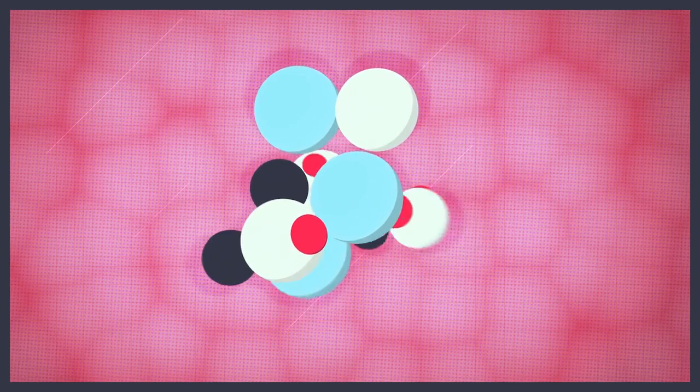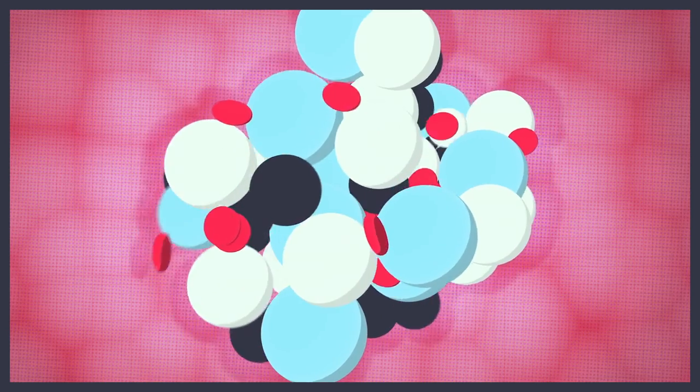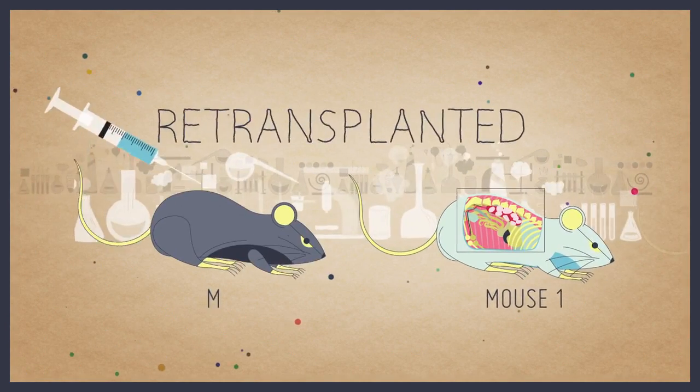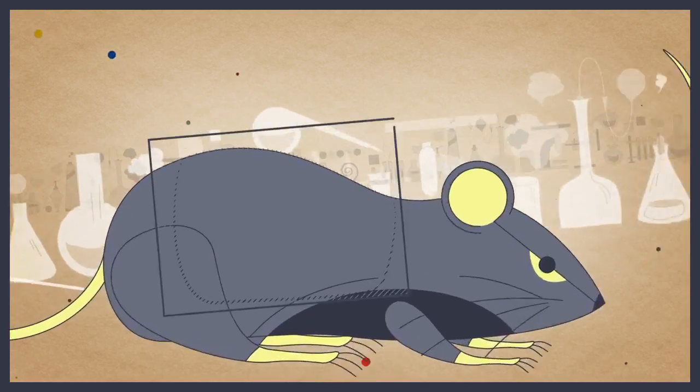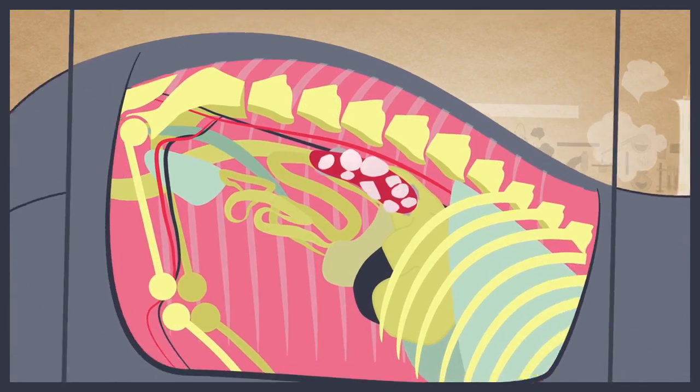These colonies contained a mixture of different blood cell types. Incredibly, when these colonies were removed and re-transplanted, these rare cells formed new colonies in the spleen of a second mouse.